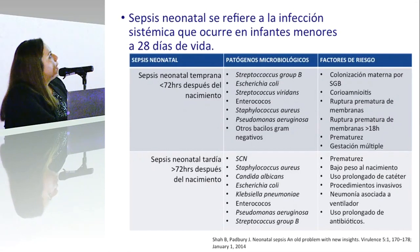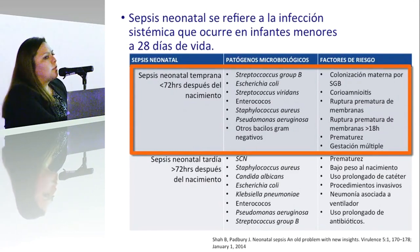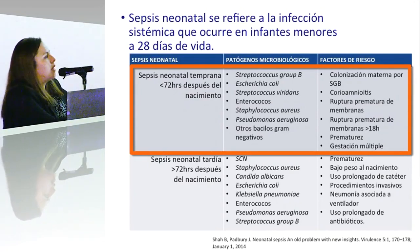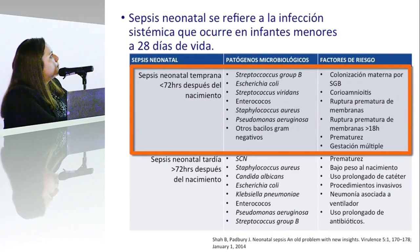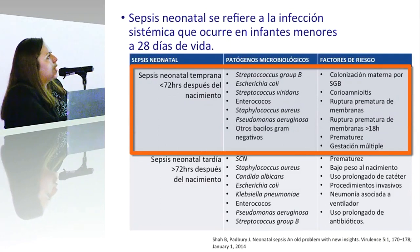En el caso de la sepsis neonatal temprana, los factores de riesgo más importantes son la colonización materna por Streptococo del grupo B, aunque ésta ha disminuido en los últimos años, sobre todo a partir del 2010, cuando la CDC estableció las guías para la detección oportuna de Streptococo y el tratamiento de las madres portadoras. También la corioamnionitis, la ruptura prematura de membranas mayor de 18 horas, la prematurez y la gestación múltiple.